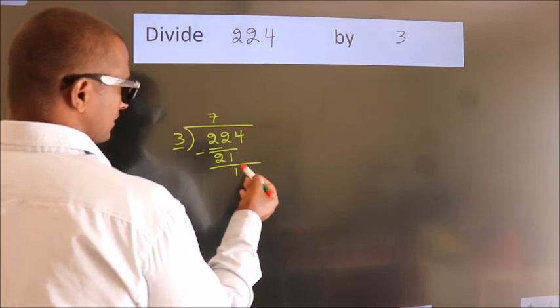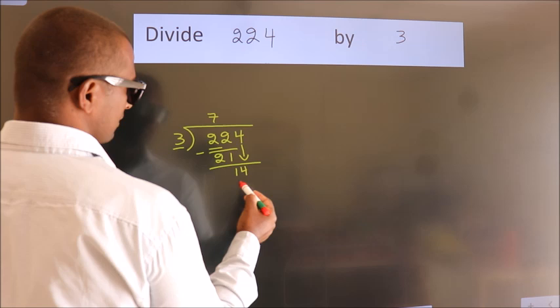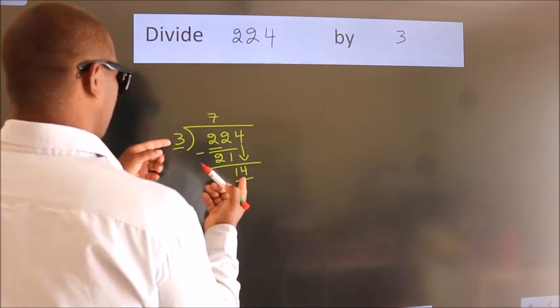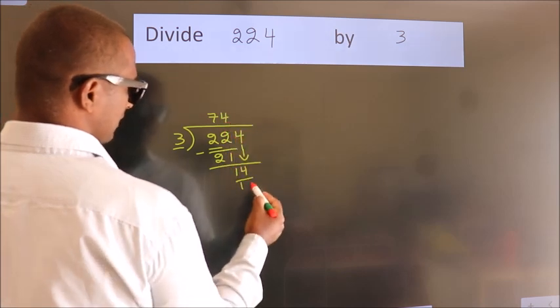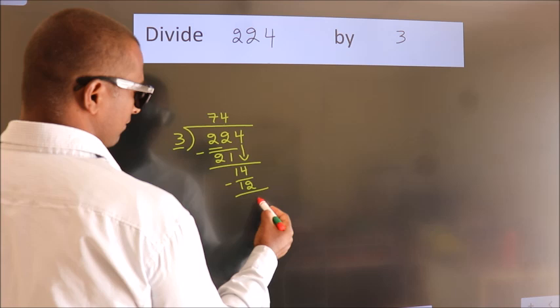After this, bring down the beside number. So 4 down. So 14. A number close to 14 in the 3 table is 3 times 4 equals 12. Now we subtract. We get 2.